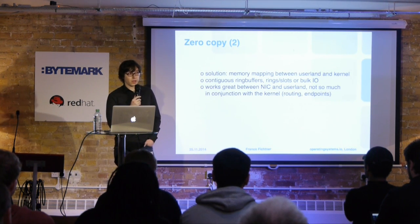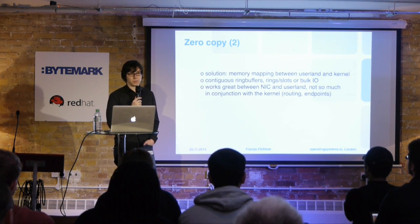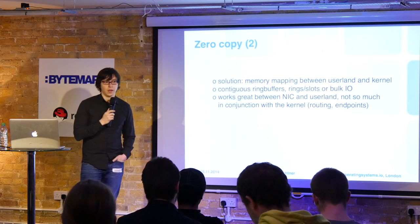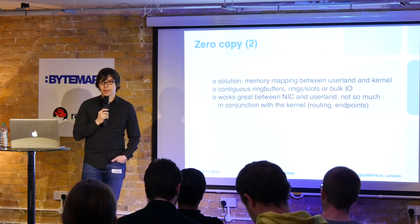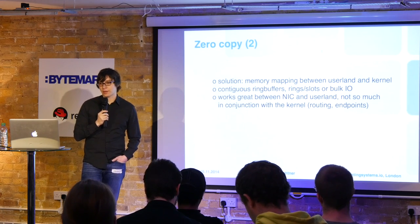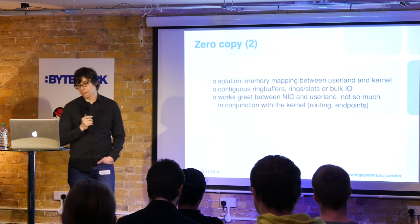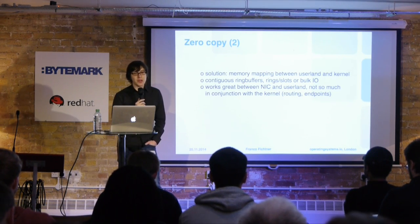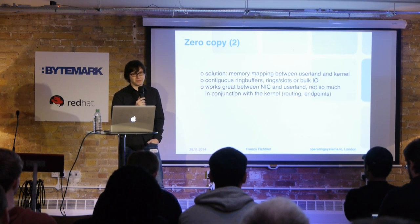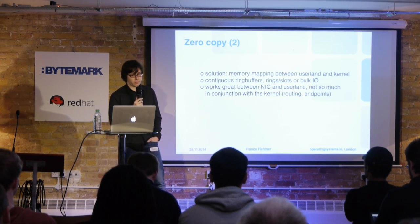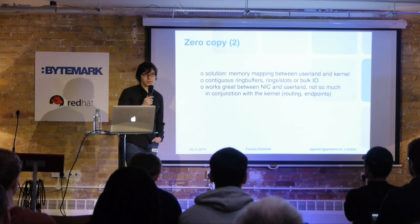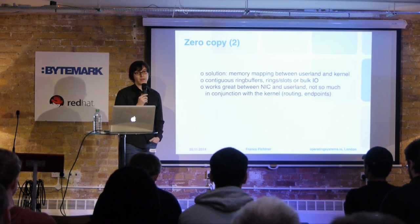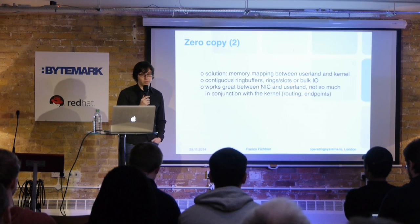Another approach is bulk I/O, which DPDK uses — it uses DMA to push packets through a memory region. You tell it where you want packets and it puts them there. All of this works great between the NIC and userland, but one remaining problem is pushing those packets back to the kernel afterwards, because that again requires copies — and that's a challenge people are still working on.